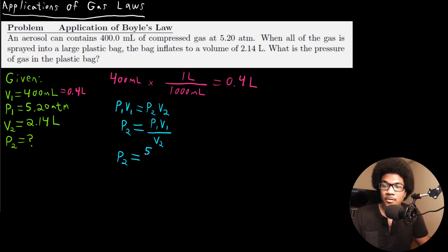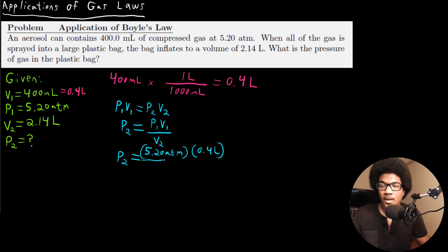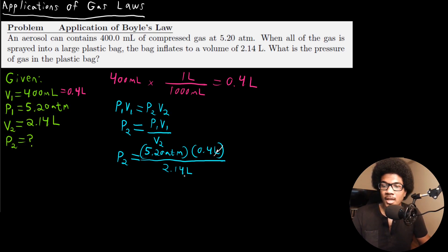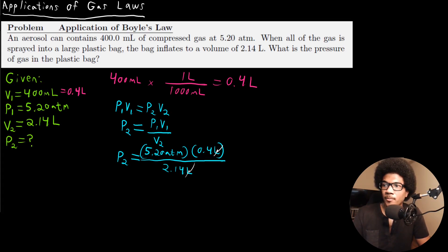Plugging in our initial pressure of 5.20 atm and initial volume of 0.4 liters over the final volume of 2.14 liters — the liters cancel out, leaving atm as our final unit. So P2 is equal to 0.97 atm.